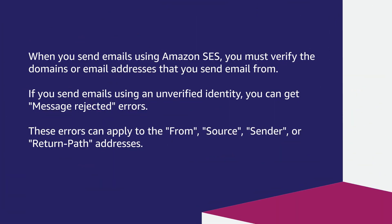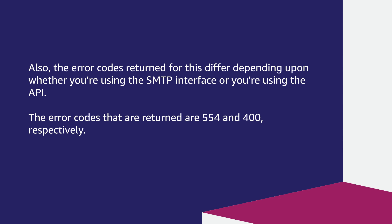When you send emails using Amazon SES, you must verify the domains or email addresses that you send emails from. If you send emails using an unverified identity, you can get message rejected errors. These errors can apply to the from, source, sender, or return path addresses. Also, the error codes returned differ depending on whether you're using the SMTP interface or the API — 554 and 400 respectively.